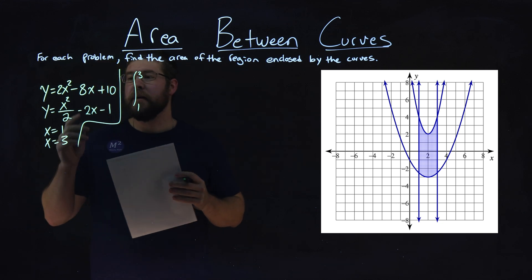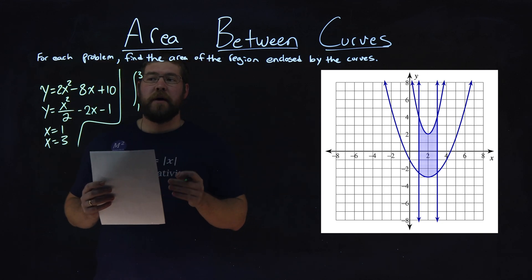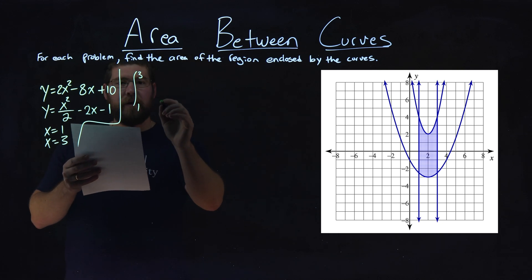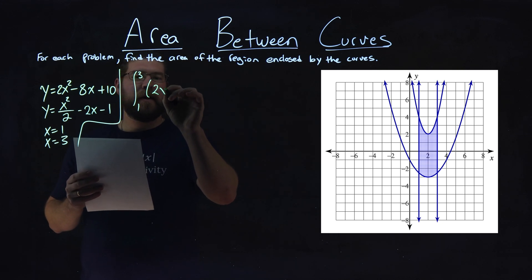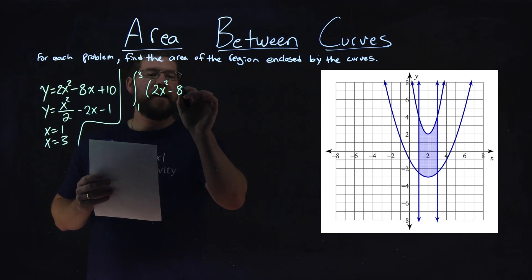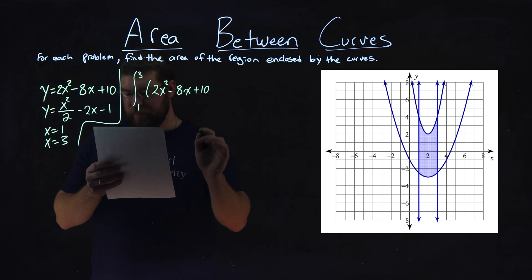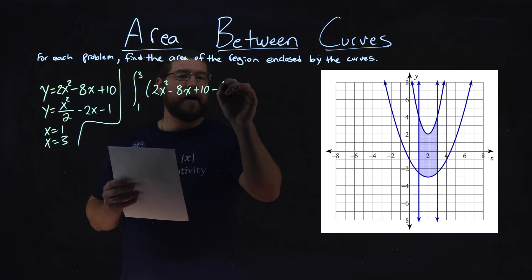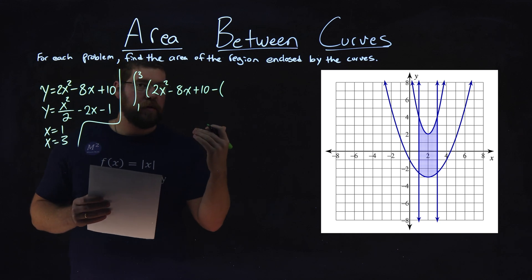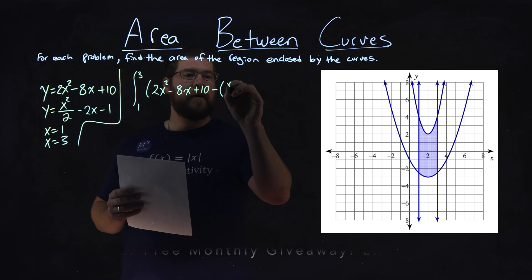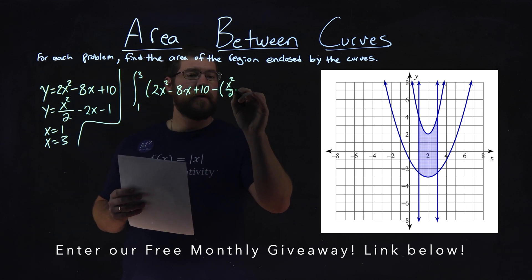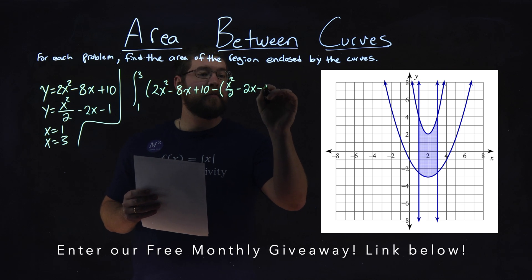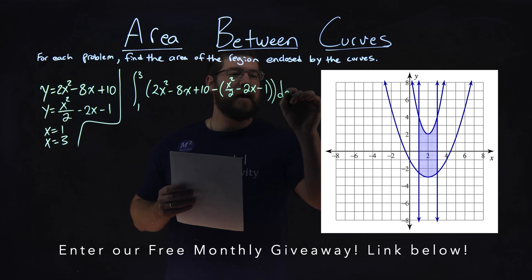So to do that, our top equation clearly is our first one, 2x squared minus 8x plus 10. So what we want to do is write that out, 2x squared minus 8x plus 10. And then we're going to subtract the second equation that's below it. So that's the x squared over 2 minus the 2x minus 1, and then dx.